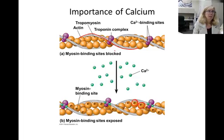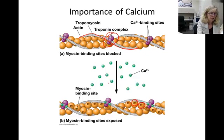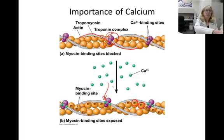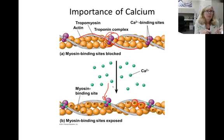If calcium is present in the cytosol, it binds to a protein called the troponin complex. The binding of calcium causes a conformational change in the tropomyosin that pulls it off the actin binding sites and allows myosin to bind.